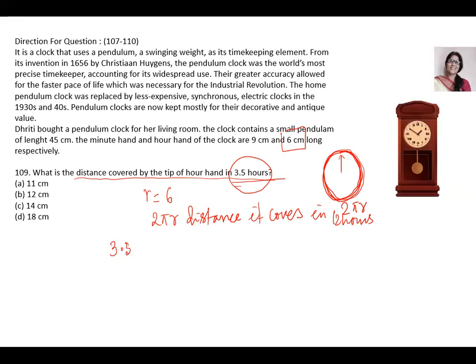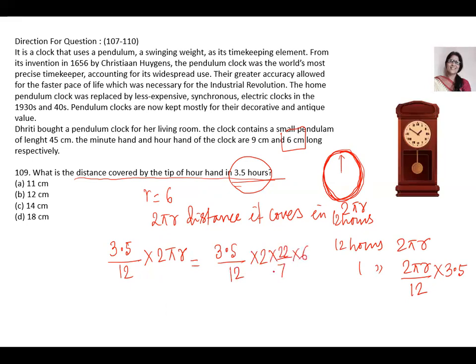So in 3.5 hours, it will be 3.5 divided by 12 multiplied by 2 pi r. So this is the ratio. So 3.5 upon 12. Or you can think of in unitary method. In 12 hours, it is covering 2 pi r. So in 1 hour, it is covering 2 pi r upon 12. So in 3.5 it will multiply 3.5. So this is the same concept. R will take as 6 cm. So it will be 3.5 upon 12 multiplies 2 into 22 by 7 multiplies 6. Now 2 canceling 6. 6 cancels 7.5. So 22 multiplies 0.5, 22 multiply 0.5 is 11 cm. So it will cover the distance 11 cm.